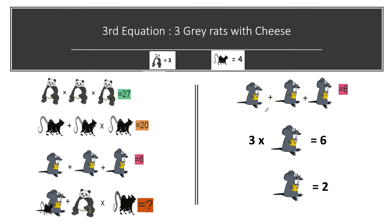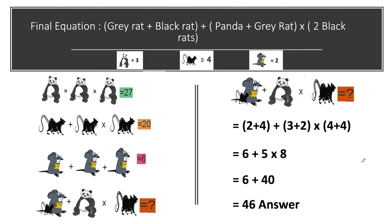Now jumping to the third equation. We have three gray rats with cheese and their sum equals 6. Solving this: 3 times one gray rat with cheese equals 6, so gray rat with cheese equals 6 divided by 3, which is 2.